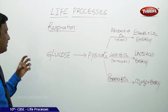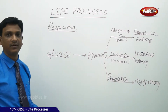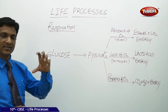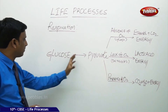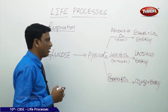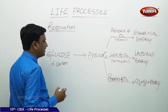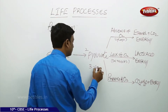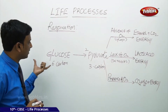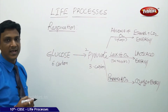Now let us see how energy is liberated from glucose through the different stages of cellular respiration. Glucose is supplied to cells and in the cytoplasm, which is the location where the primary part of this reaction takes place, glucose is converted to pyruvate or pyruvic acid. Glucose is a 6-carbon compound which is converted to 2 pyruvate molecules of 3 carbons each. This process is called glycolysis.